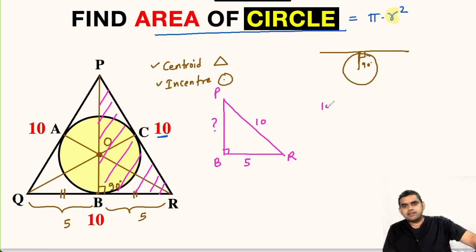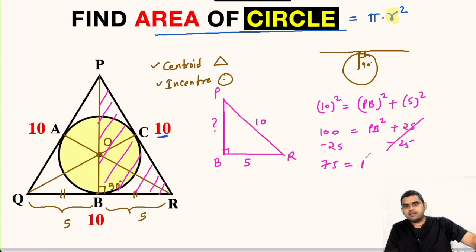So we can write 10 squared is equal to PB squared plus 5 squared. So this will be 100 equals PB square plus 25 subtracting 25 from both sides. So this will be 75 equals PB square. So PB will be equal to square root of 75 which is 5 root 3 units.